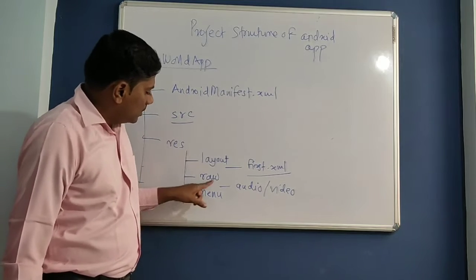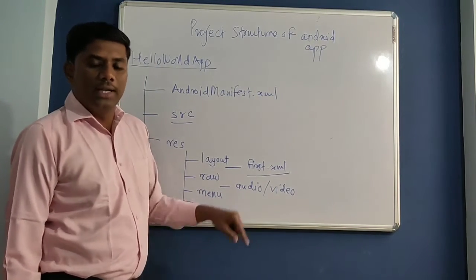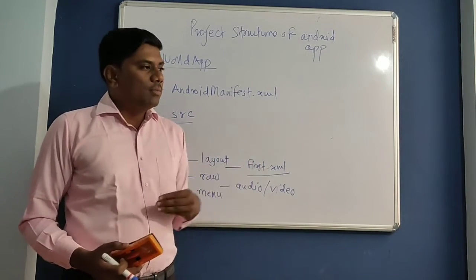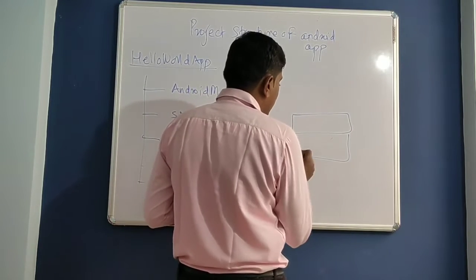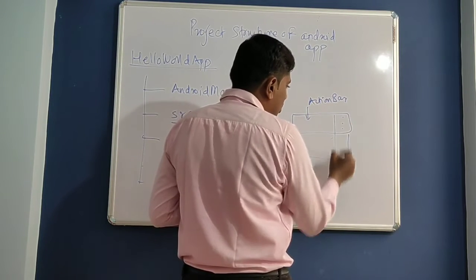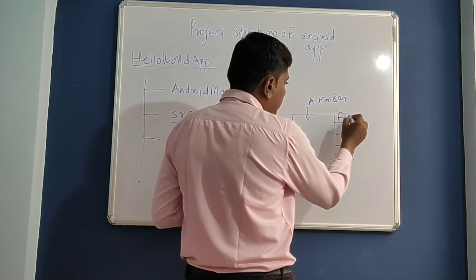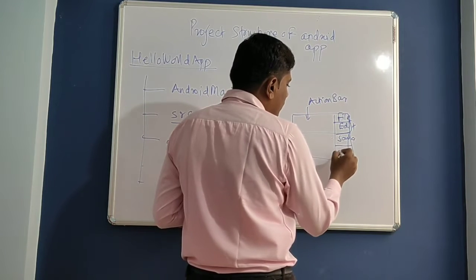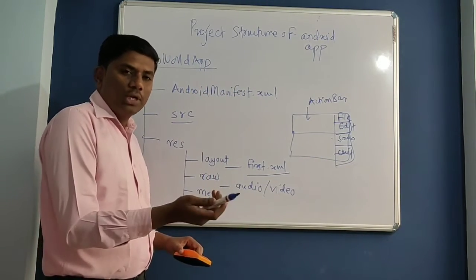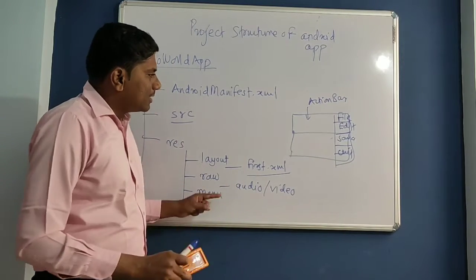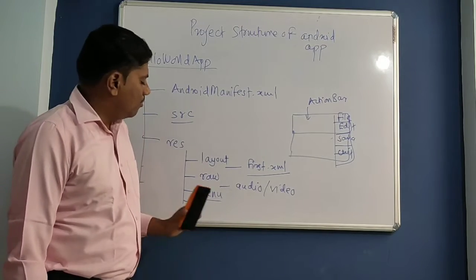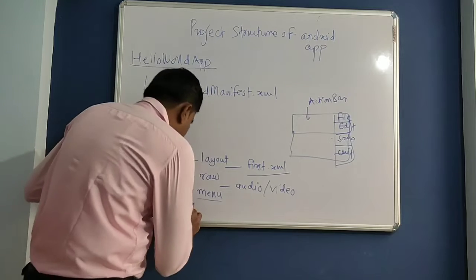The menu folder is also not created by default — you can create it later. If you want to have option menus and context menus in your Android application, those menu items are stored in an XML file such as menu.xml. For example, if you click a three-dot action bar icon and get menus like File, Edit, Save, Exit — those menus are stored in an XML file present in the menu folder.